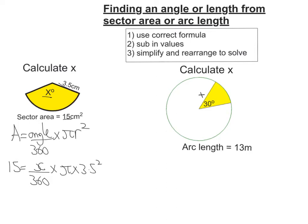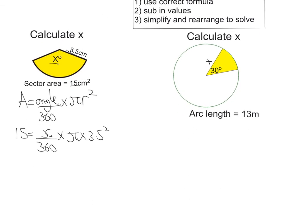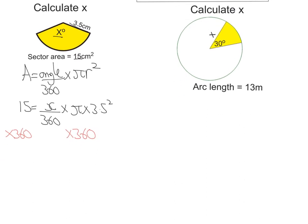Now I have an equation. I simplify and rearrange to solve. First, I'm going to move that 360 — it's on the bottom of a fraction, so if I multiply both sides by 360, it moves to the other side and multiplies the 15. Doing that gives: 5,400 equals x times pi times 3.5 squared.